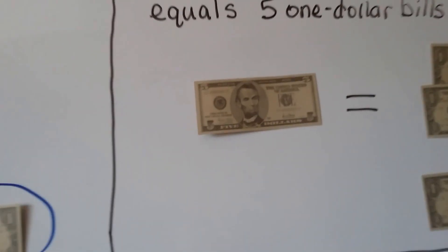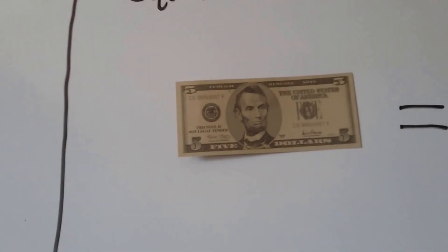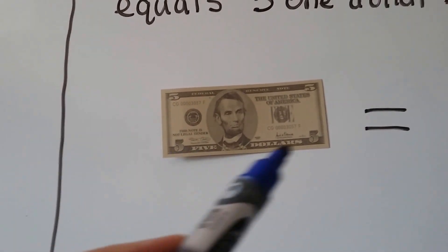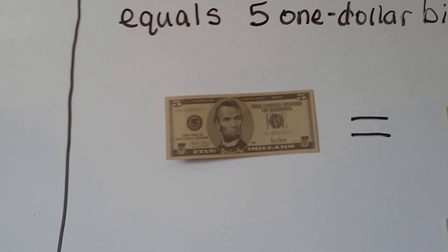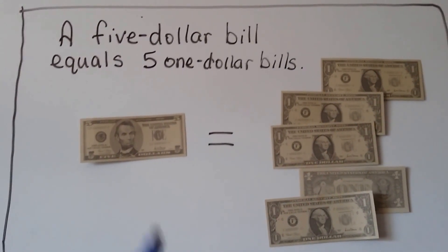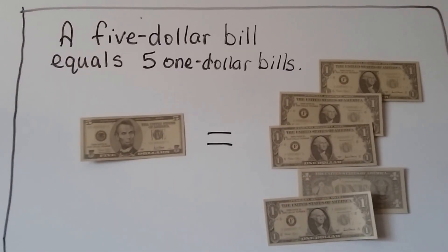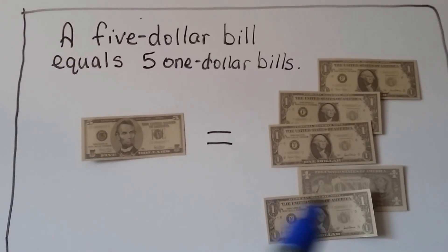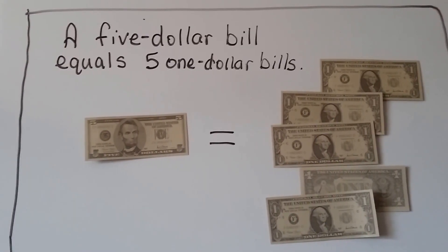Now here's a 5 dollar bill, and it's got a picture of Abraham Lincoln on the front, and we can see it says 5 dollars at the bottom, and there's a 5 in each corner, that's a 5 dollar bill. A 5 dollar bill is equal to 5 one dollar bills. It's the same value. You could get change from a store or a bank and change that 5 dollar bill into 5 singles, into 5 ones.